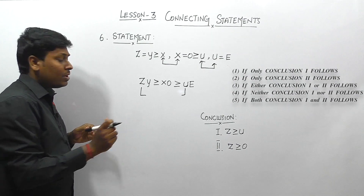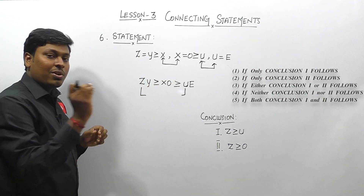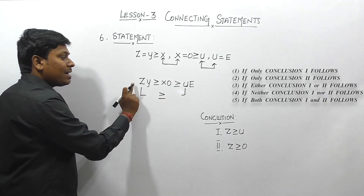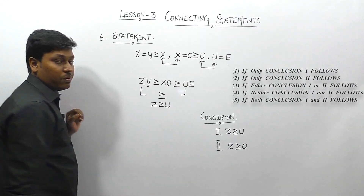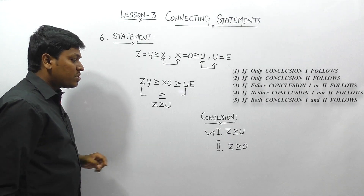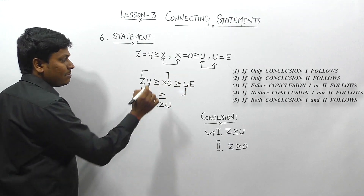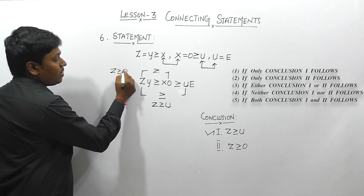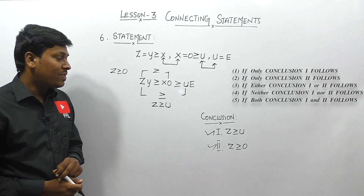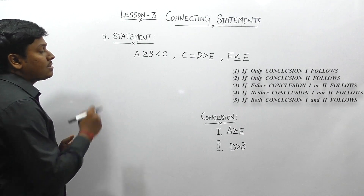Conclusion 1: Z ≥ U. Between Z and U we have two symbols, both ≥. The common symbol is ≥, so Z ≥ U — conclusion 1 is true. Conclusion 2: Z ≥ O. Between Z and O there is only one symbol: ≥, so Z ≥ O — conclusion 2 is also true. Answer: option 5, both conclusions follow.